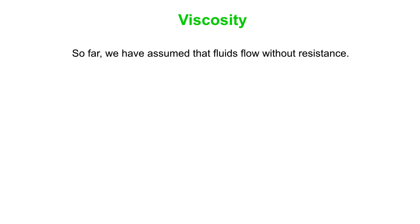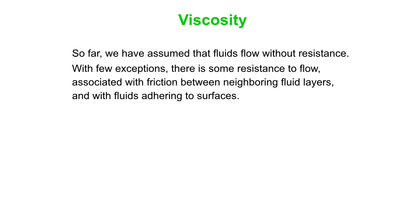So far we've assumed that fluids flow without any resistance whatsoever. Now, in real life, there is some resistance to flow, and that's associated with basically friction between neighboring fluid layers which are moving past each other at different velocities, and also from fluids adhering to surfaces. So the stickiness of fluids is a measure of its viscosity.